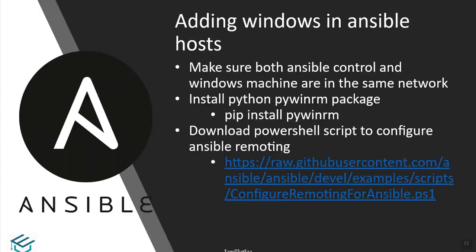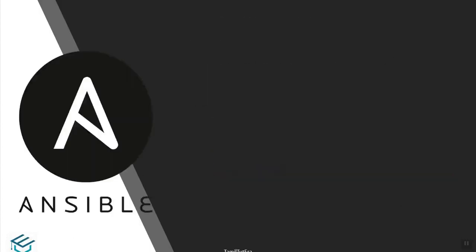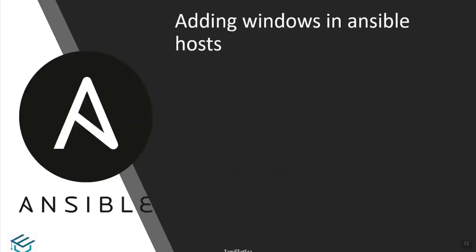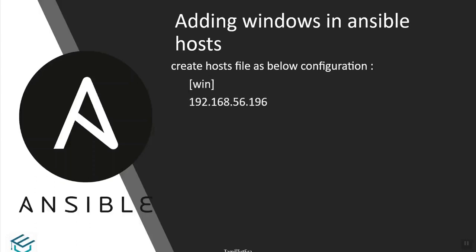You can download the path and execute the PowerShell script on the Windows machine. Let's look at the demo. There is an adding Windows in Ansible. How do you configure Windows in the host file? You can use a group, Windows and IP, or the host name.